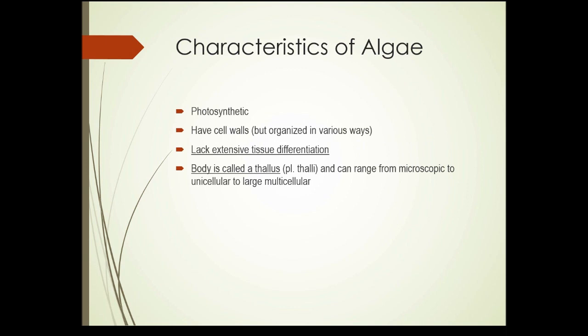So what are the characteristics of algae? What makes algae, algae? First of all, they're photosynthetic — they can make food from sunlight, carbon dioxide, and water. They have cell walls similar to other plants.